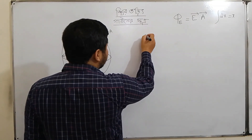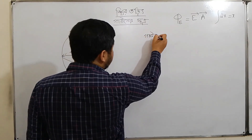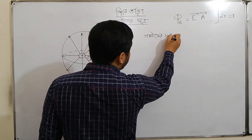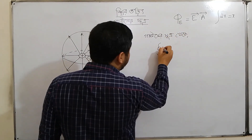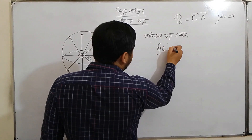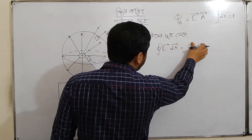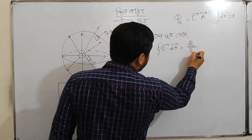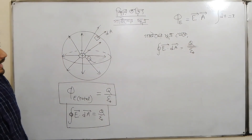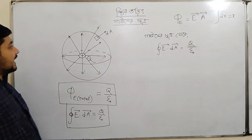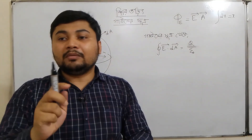Gauss's surface — what is it? Integration of E dot da equals to q divided by epsilon naught. What are we saying here? Look at which direction da is going. If on a spherical surface, if one area element is taken —